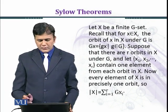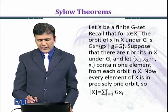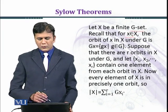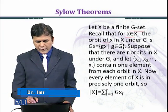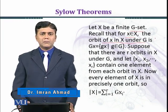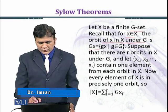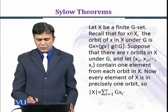Let X be a finite G-set. Recall that for x belonging to X, the orbit of x in X under G is given by Gx = {gx | g ∈ G}.